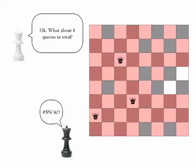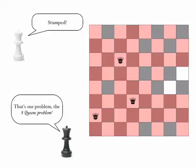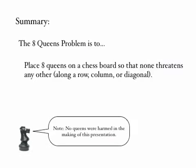Now, the eight queens problem, then, is to try and place eight queens on the board in such a way that they don't threaten one another. In summary, place eight queens on a chess board so that none threatens any other along a row, column, or a diagonal.